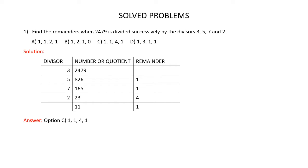So now we have to divide the number 2479 first by 3. When you divide 2479 by 3, you get 826 as the quotient and 1 as the remainder. Now this quotient 826 becomes the dividend for the next division. So 826 is divided by the next number 5, giving 165 as the quotient and 1 as the remainder.